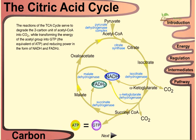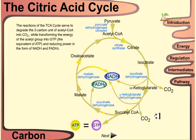The reactions of the TCA cycle serve to degrade the two-carbon unit of acetyl-CoA into carbon dioxide, while transforming the energy from the acetyl group into GTP — equivalent to one ATP — and the reducing power of NADH and FADH2. Two carbons are ultimately released as two carbon dioxide molecules, and the cycle also generates one GTP as well as NADH and FADH2 in successive steps.